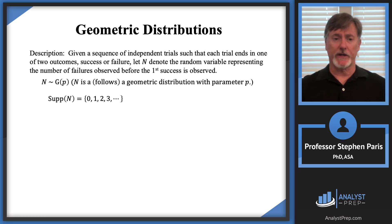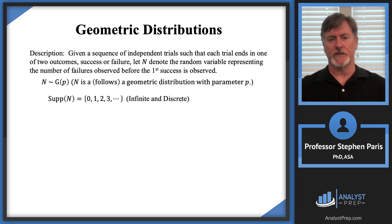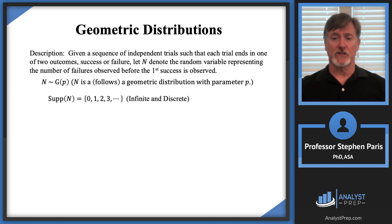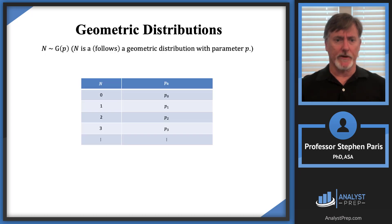This is a discrete random variable whose support is a discrete set, but this is actually an interesting distribution — this is the first one that we see where there are an infinite number of values in the support. So it's a discrete distribution, but there's an infinite number of values in the support. Let's talk about calculating some of the probabilities in the probability table for this random variable.